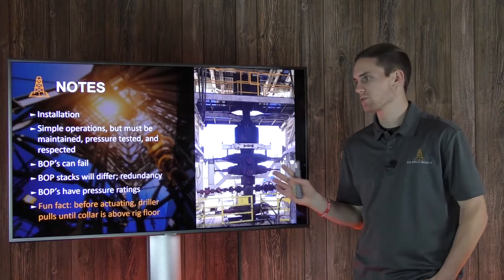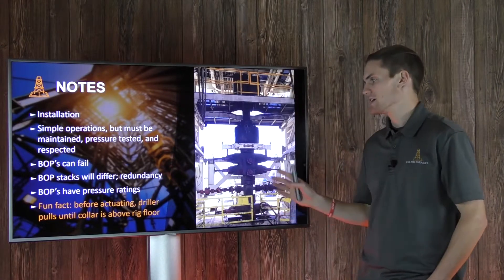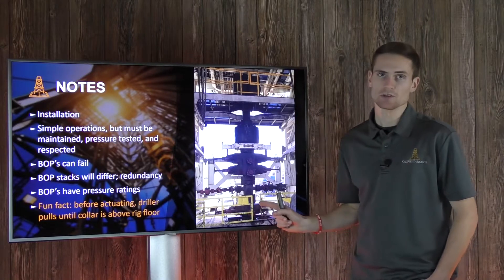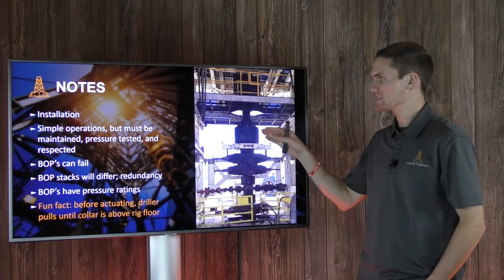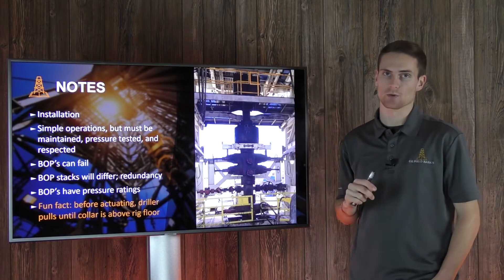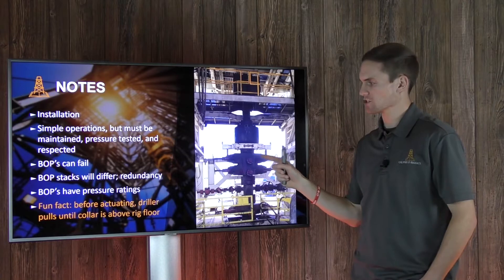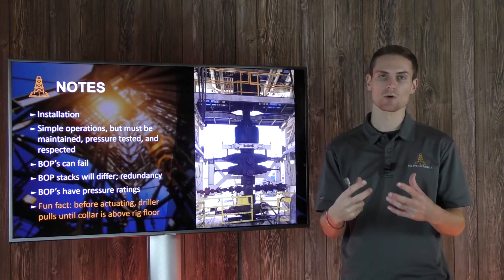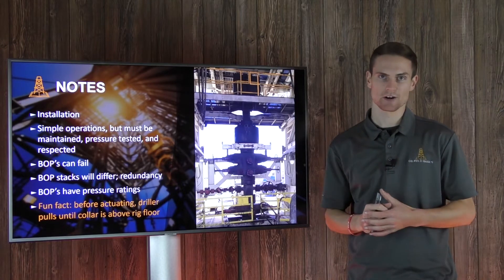A quick fun fact: before a driller actually actuates the BOPs, he's going to make sure that he doesn't have any collars within the BOP stack itself. He'll pull up the work string until he sees the first collar at the surface of the rig floor. This ensures the valves can actuate and shut properly, sealing around the body of the drill pipe rather than around a collar, because the BOP is not designed to seal around a collar.